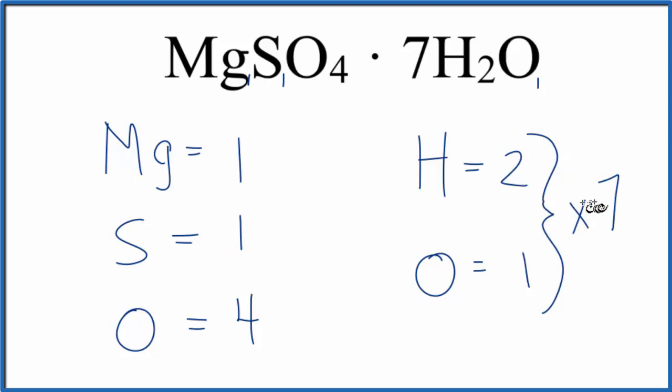So two plus one is three times seven. We have 21, 22, 23, plus four, 27 total atoms in MgSO₄·7H₂O. This is magnesium sulfate heptahydrate.